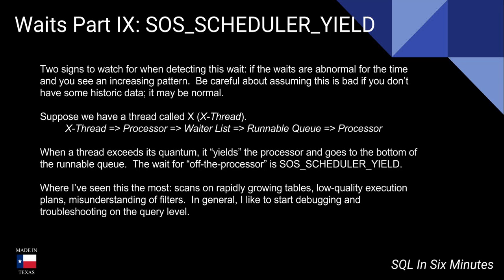Where have I generally seen this? Pretty much all cases have been either scans — a table scan or a non-clustered index scan — what I call a low-quality execution plan. It's very similar to a non-sargable query: a misunderstanding of what the WHERE clause is doing. If you write a query a certain way, it will scan every single record, but with a proper WHERE clause you can filter it to scan only a few records.